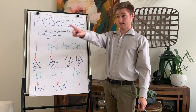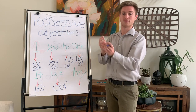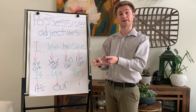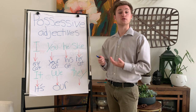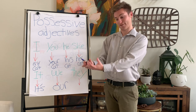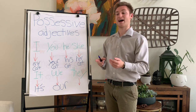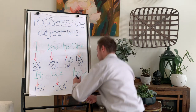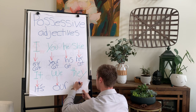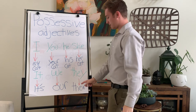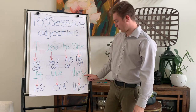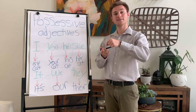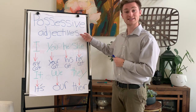Finally, for 'they' — a group of people outside of you — 'they' becomes 'their'. That is their cat. For example, if you go to a friend's house and they have a cat or a dog, that is their cat, or their baby. Spelled T-H-E-I-R. We get rid of the Y and add an I and an R.